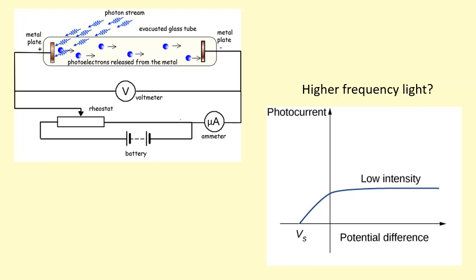What happens if you use a higher frequency of light? Each photon is shorter wavelength, and that means they have more energy. The work function hasn't changed because we're still using the same metal. So KE max will be larger, and therefore the stopping voltage will be larger.